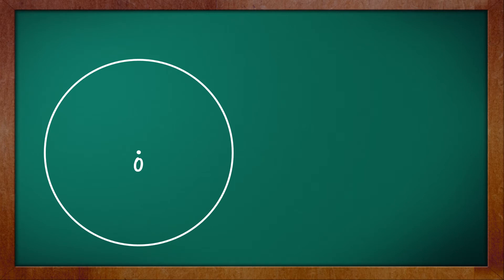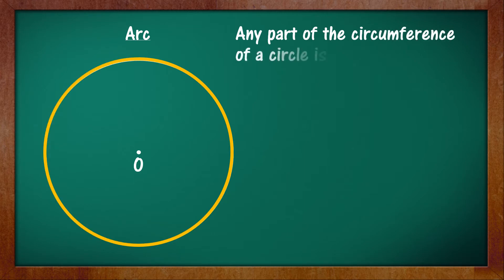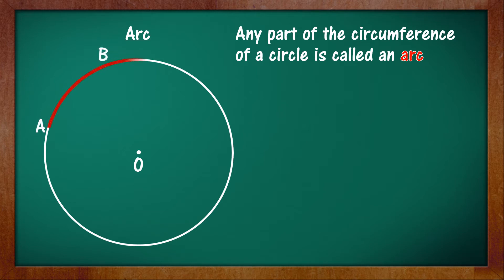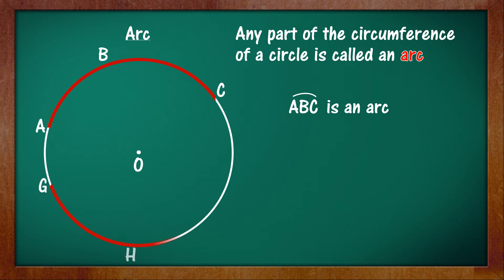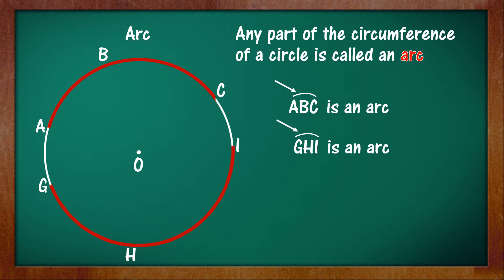Now we will learn what is an arc. Any part of the circumference of a circle is called an arc. It can begin from point A through B till point C, which means ABC is an arc, or it can begin from point G through H till point I, which means GHI is an arc. Note that while naming an arc, a small curve is drawn above the letters representing the points, for example arc ABC or arc GHI.